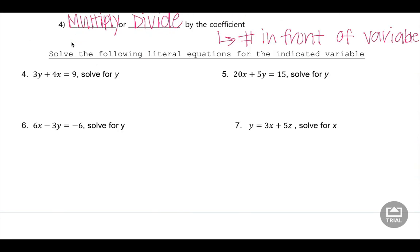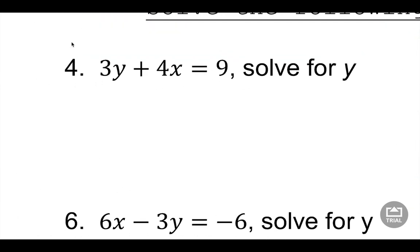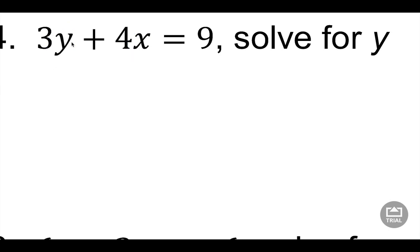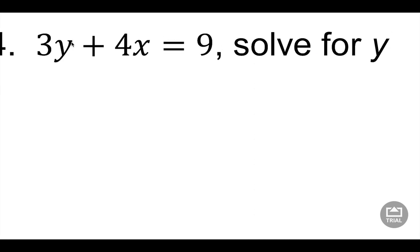Solve the following literal equations for the indicated variable. You're going to be given something like this: 3Y plus 4X equals 9. Is this a literal equation? Yes - I've got two variables. Two or more variables means it's literal. And it tells me what to solve for - solve for Y. So first step, draw the line. Then I'm going to label. I'm solving for Y, so one side is my Y side and one side is everything else but Y. My Y is already over here, so I'm going to keep Y over here.